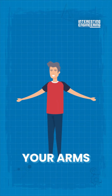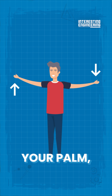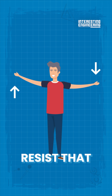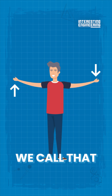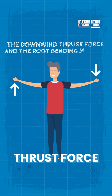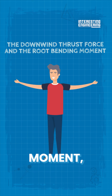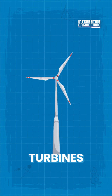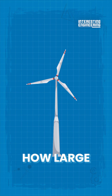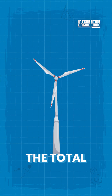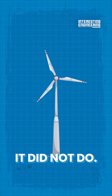If you have your arms spread out and someone presses on your palm, you have to resist that movement, said Schmitz. We call that the downwind thrust force and the root bending moment, and wind turbines must withstand that too. You need to understand how large the total load is, which Glauert did not do.